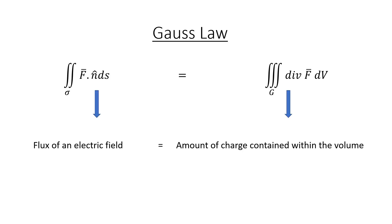One of the applications of Gauss Divergence theorem is Gauss's Law. The left-hand side, the double integral over sigma of F dot n dS, gives you the flux of an electric field, and the right-hand side, the triple integral over G of the divergence of F dV, is the amount of charge contained within the volume.